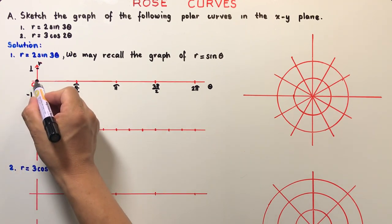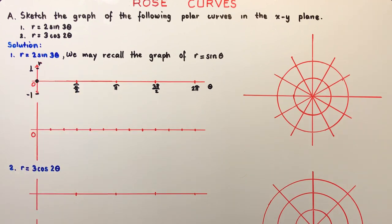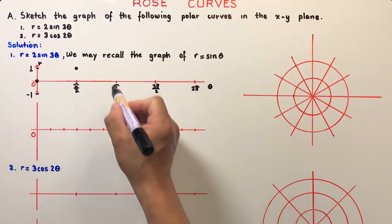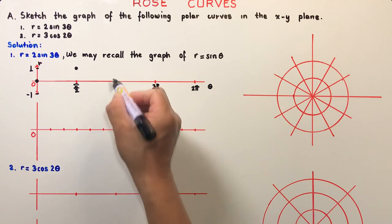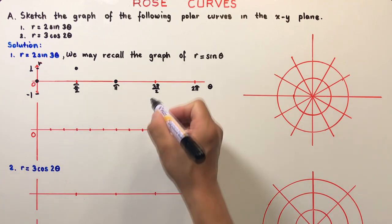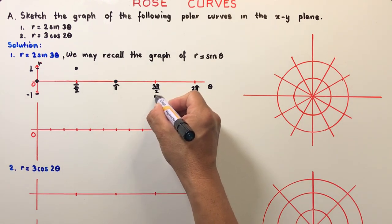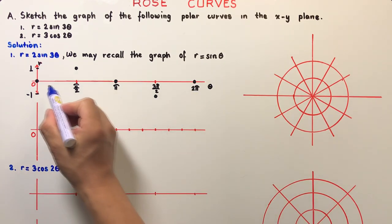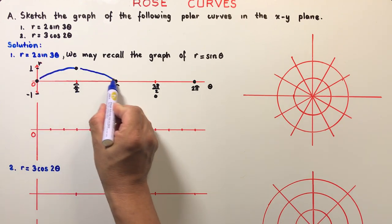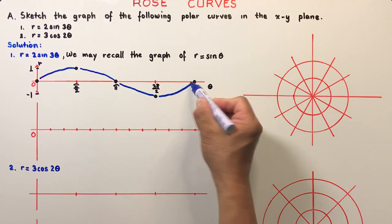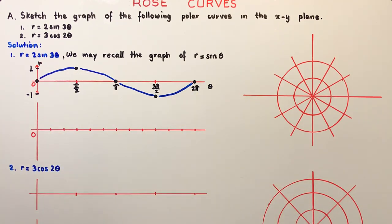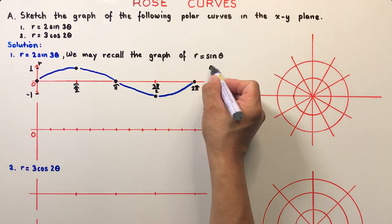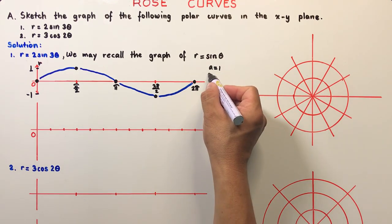When theta is 0 the value is 0, when theta is π/2 it's 1, when it is π it is 0, when it is 3π/2 it is negative 1, and at 2π the sine is 0 again. Connecting these points we sketch the sinusoidal curve. The amplitude is 1 and the period is 2π.